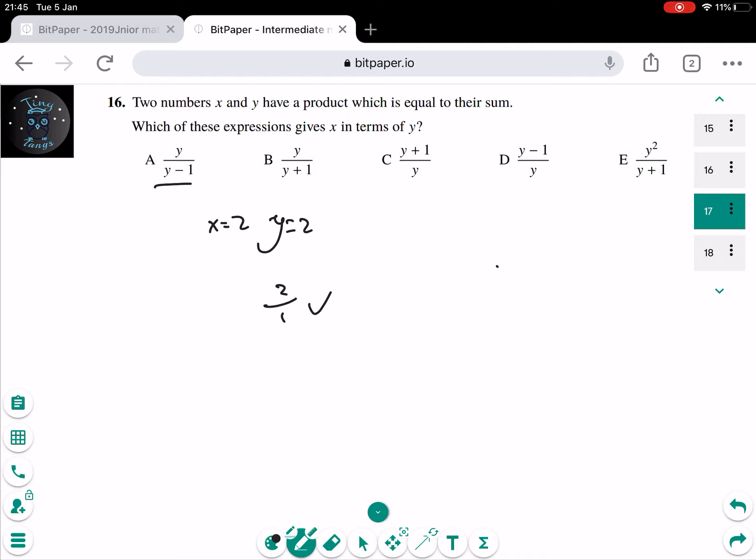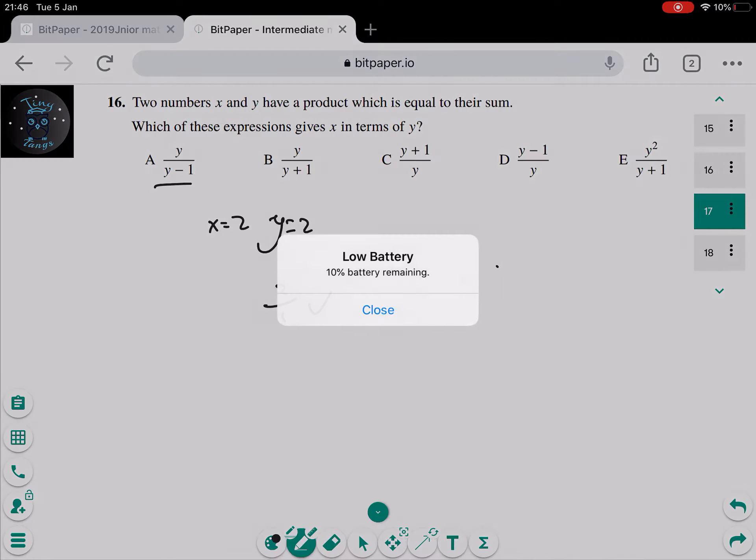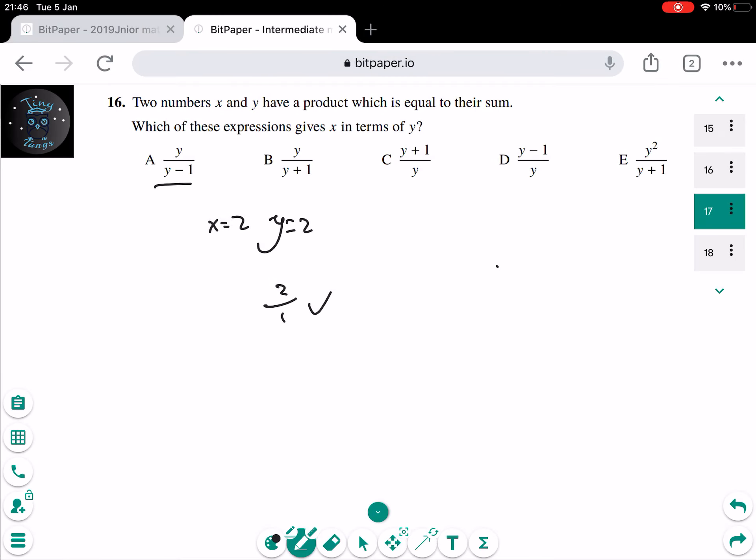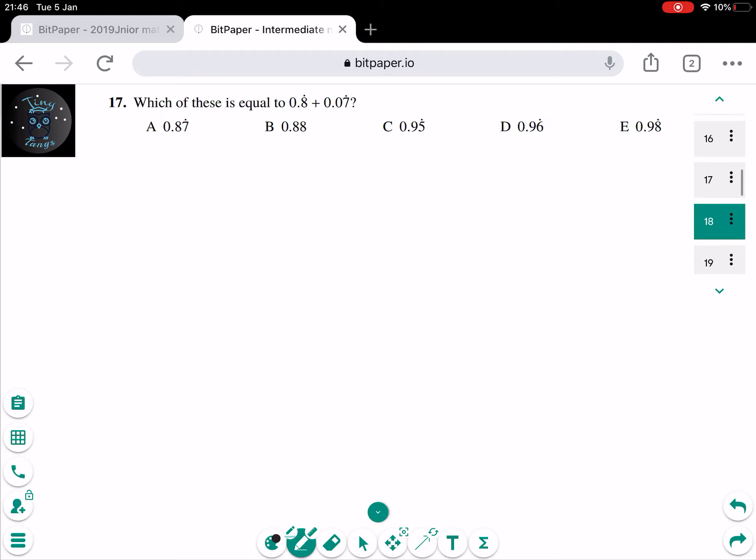And 2 over 2 plus 1, so 2 over 3, that wouldn't work. 3 over 2 wouldn't work too. And 1 over 2 won't work, so a half won't work. And 4 over 3 won't work too. So the answer is A for question 16.